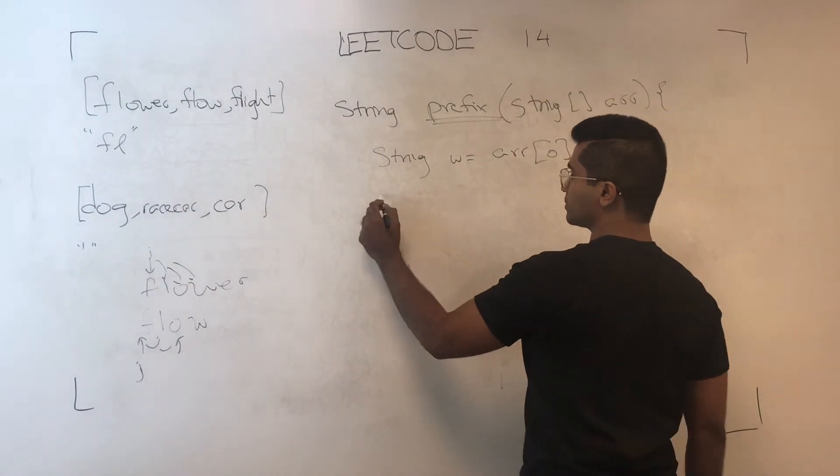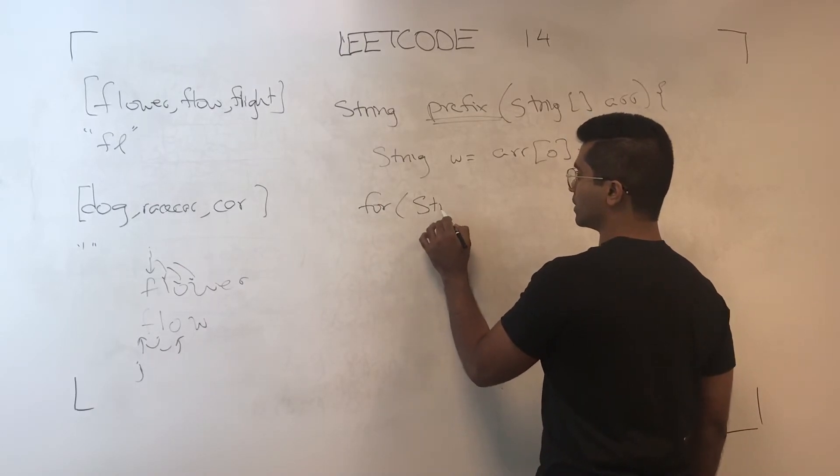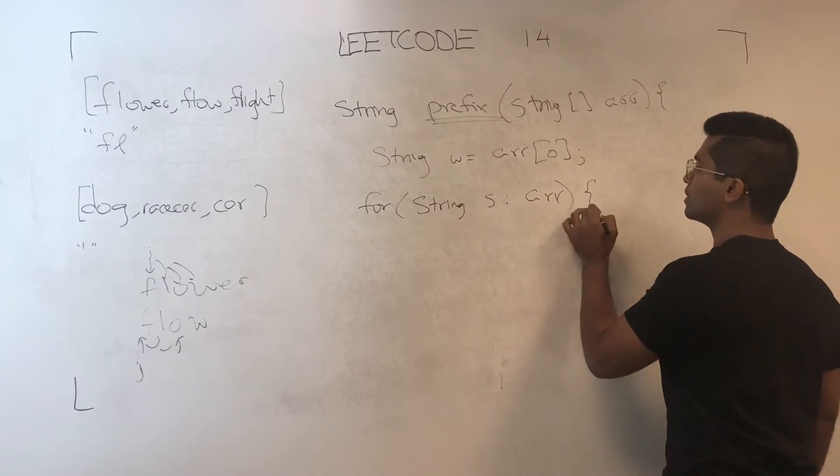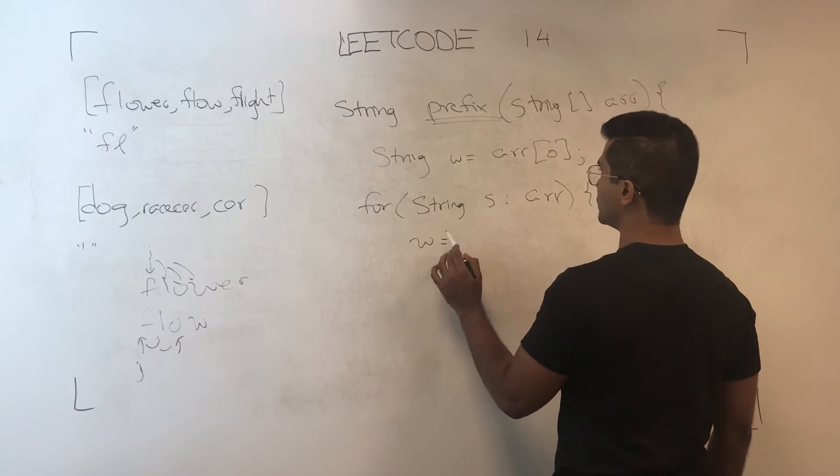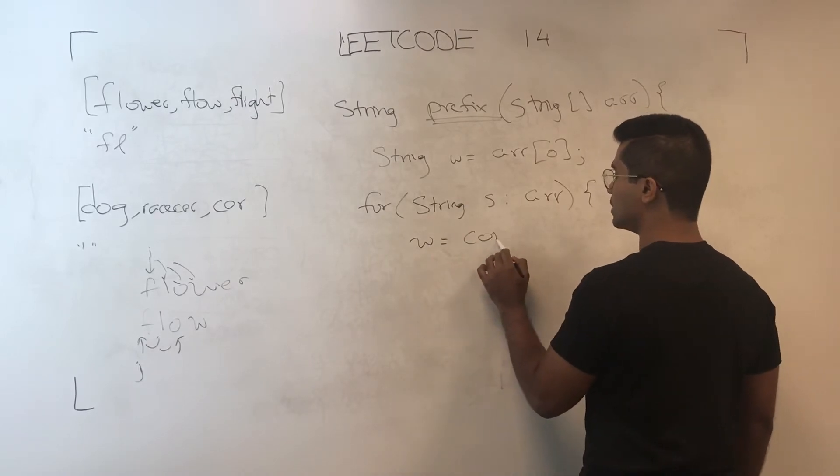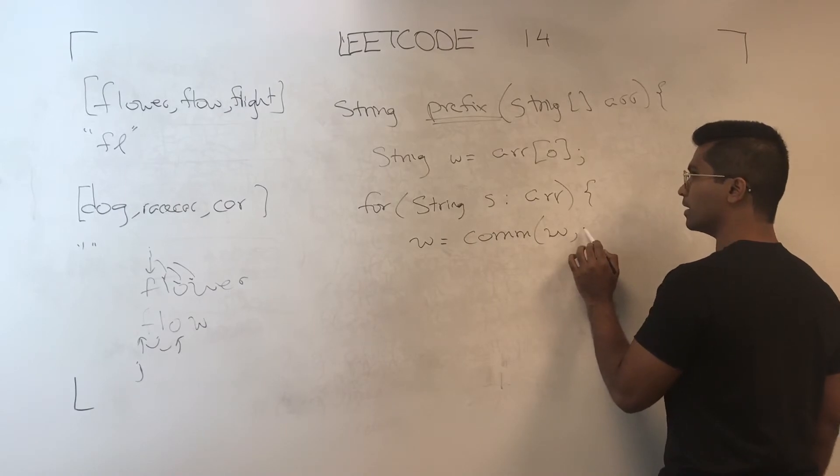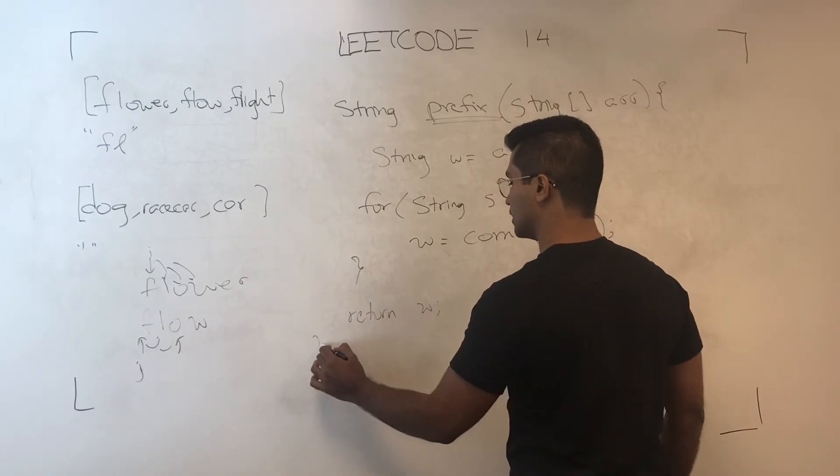So for string s through arr, w is going to be passed to common w and s. And then all we have to do is return w.